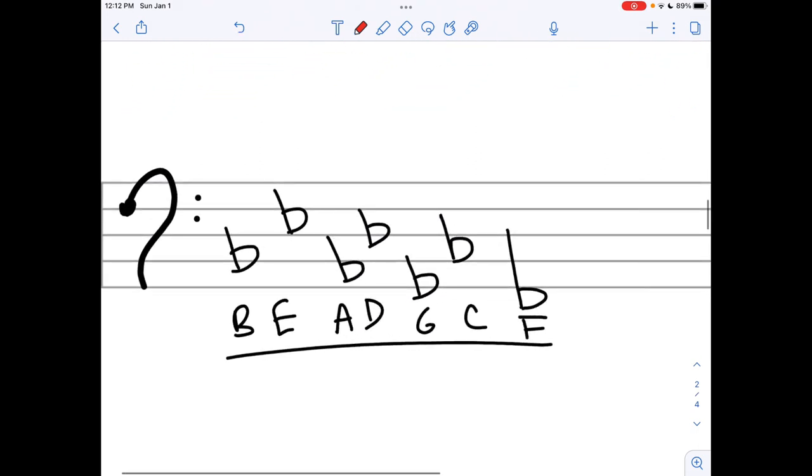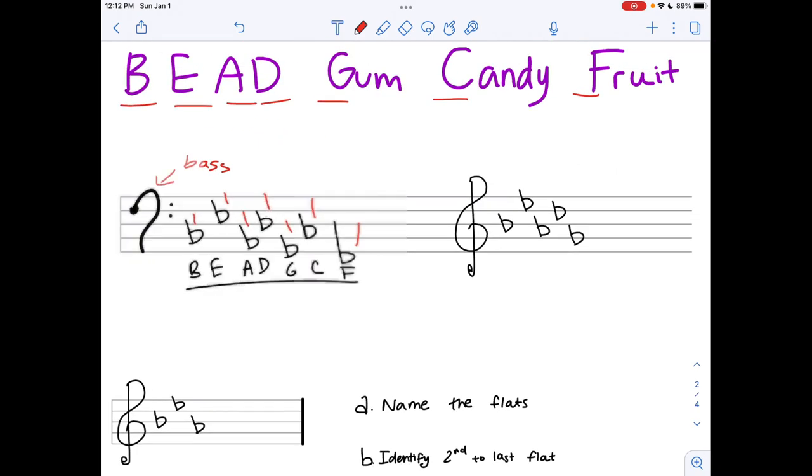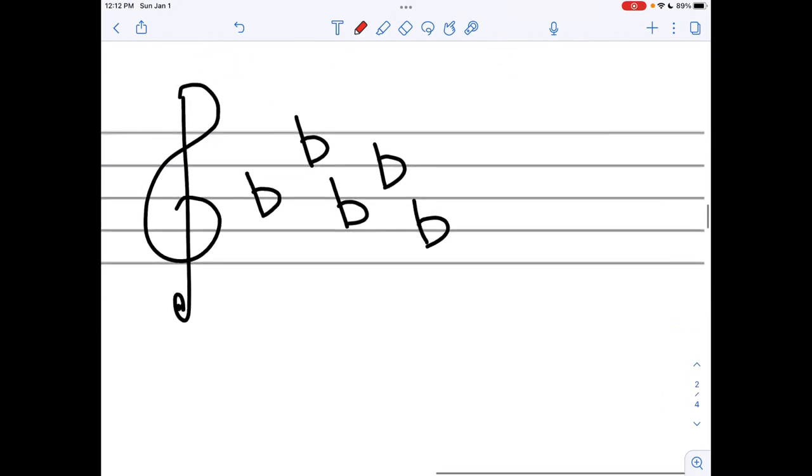Let's look at this first example. We can see which ones we have: we have B flat, E flat, A flat, D flat, G flat, C flat, and F flat. So this is an example in bass clef. Now we have another example, except